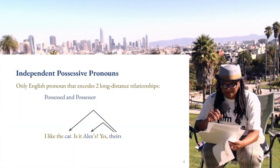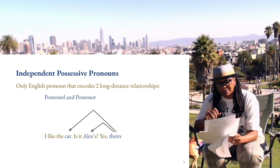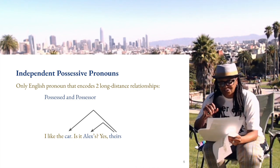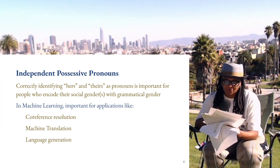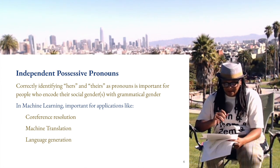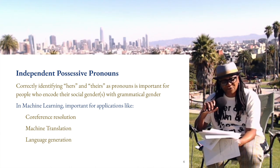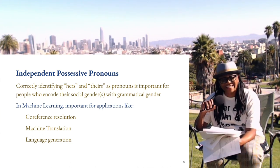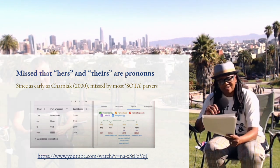Independent possessive pronouns are especially interesting in English because they are the only pronoun that includes two long-distance relationships: the possessed and the possessor. For people who use 'hers' and 'theirs' as part of their gender diversity, it's important for applications to correctly identify them as pronouns. Unfortunately, for more than 20 years, every major state-of-the-art parser missed 'hers' and 'theirs,' with no such error for 'his.'